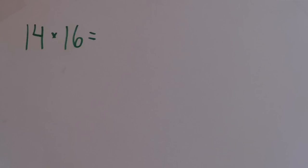For this trick, you have to notice that the ones digit adds up to 10 and the tens digit is the same. To do it, you multiply the ones digits together first, so 6 times 4 equals 24, and then you do the tens digit times 1 plus itself, so 1 times 1 plus 1 gives you 2.